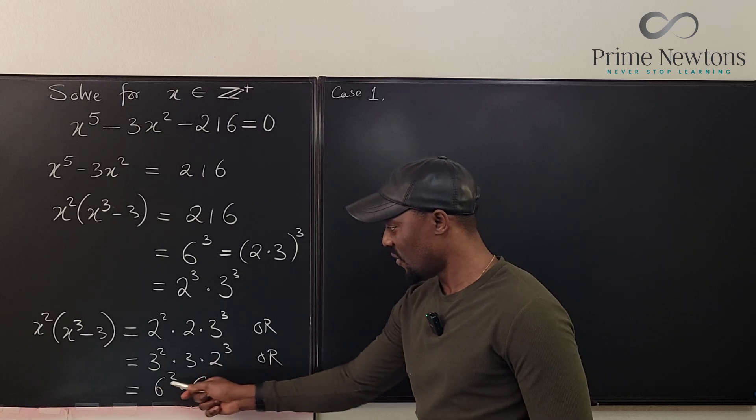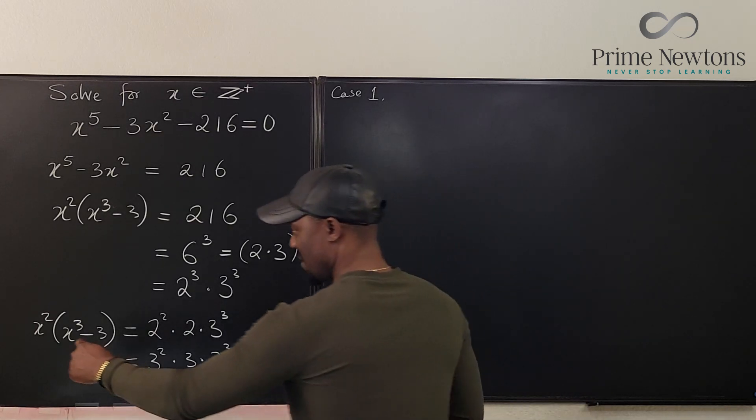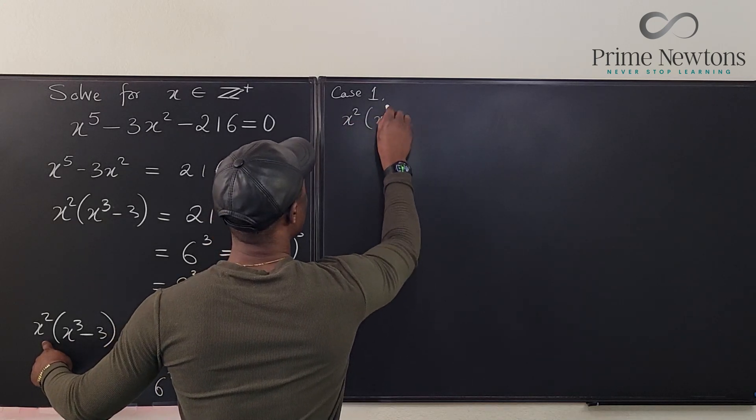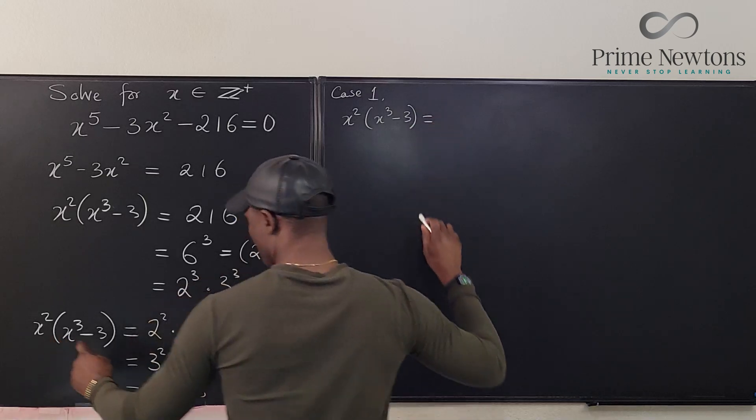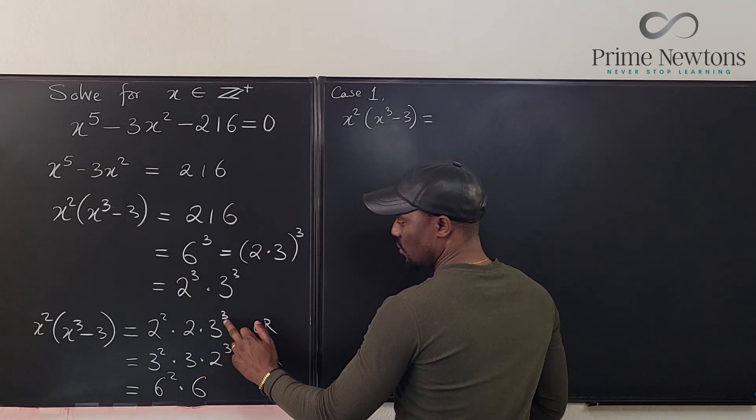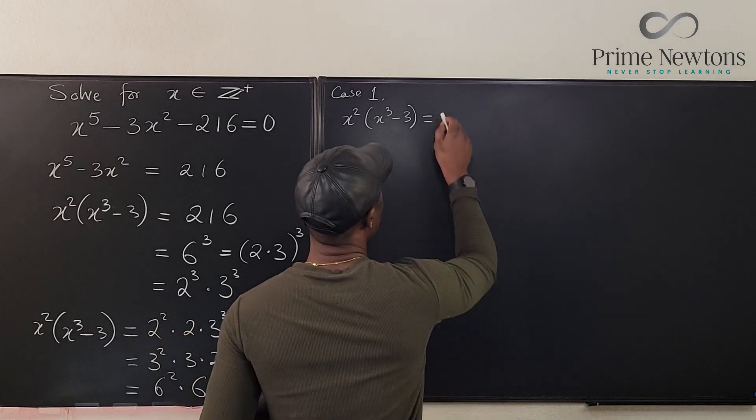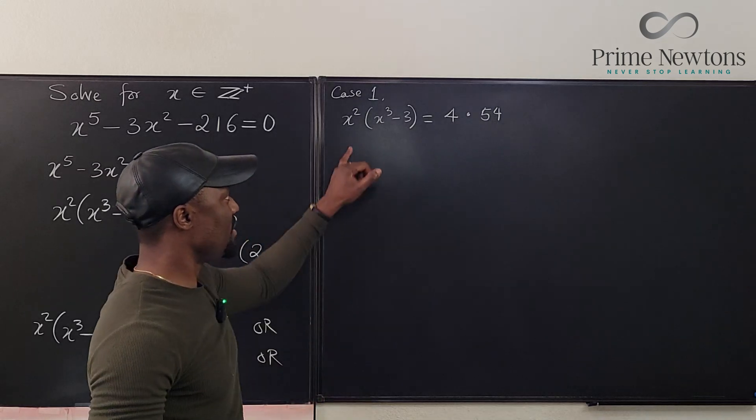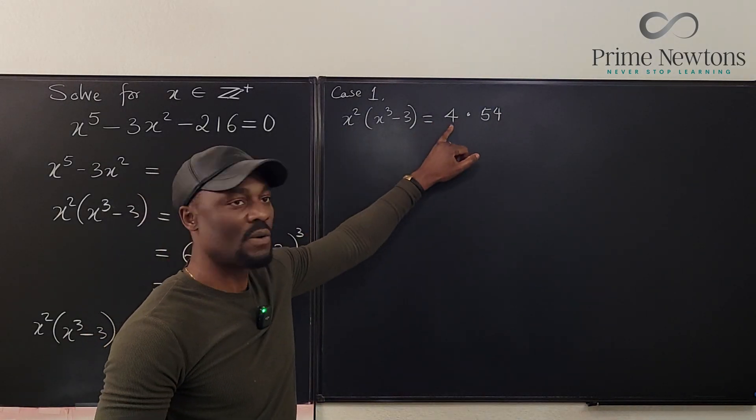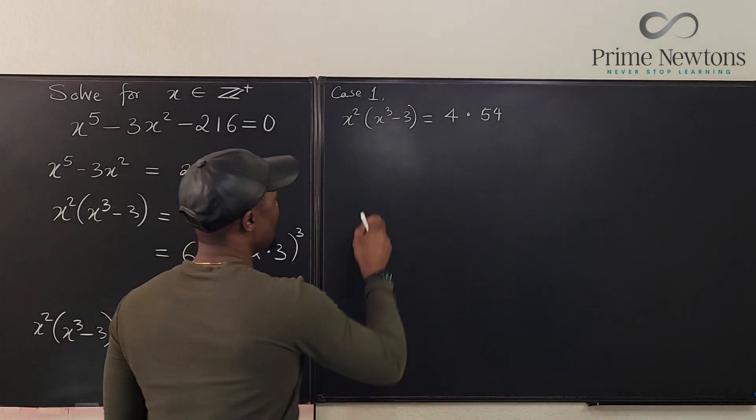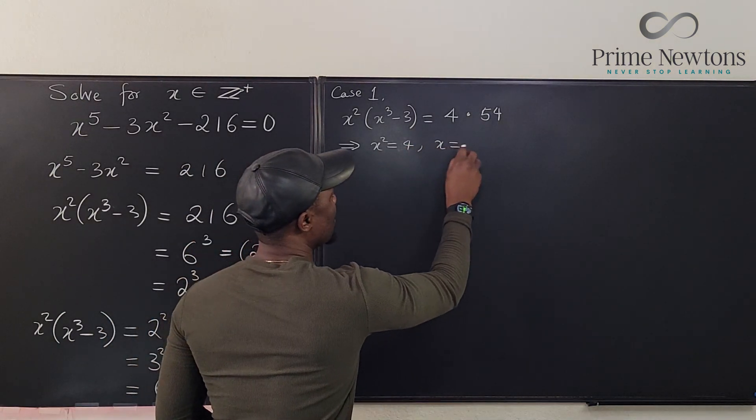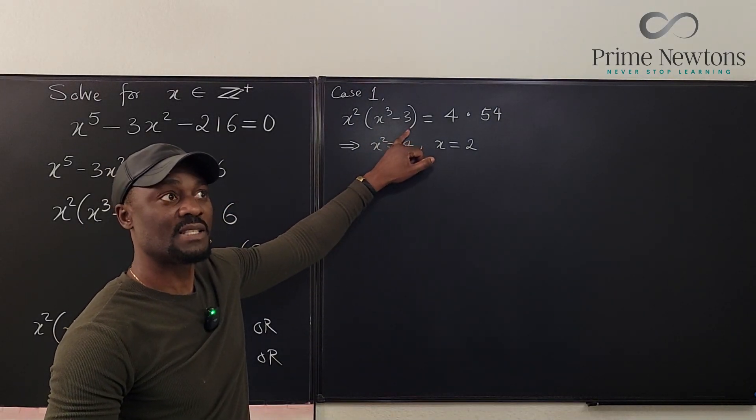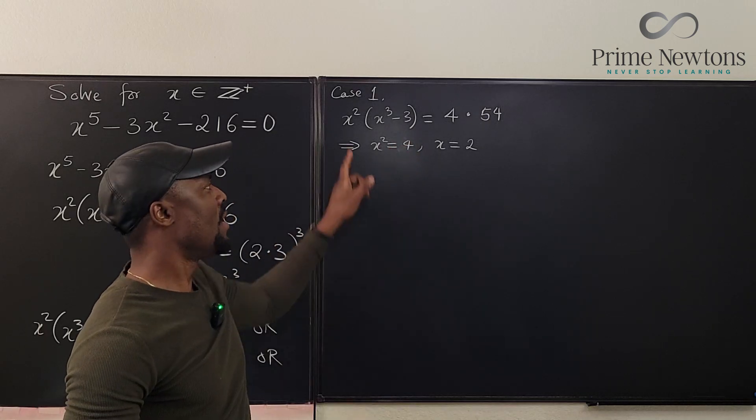Let's start with the first option. Case 1: we have x squared times (x cubed minus 3) equals - this is going to be 4 times 27 times 2 is 54 - 4 times 54. Now what does this mean? It means that my x squared is 4, so x equals 2. If x equals 2, what would this be? This is going to be 2 cubed minus 3, that's 8 minus 3, which is 5. Four times five.